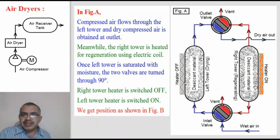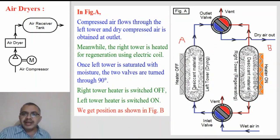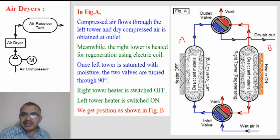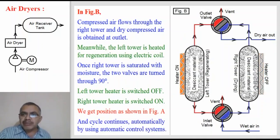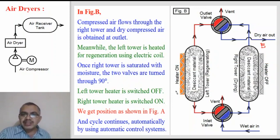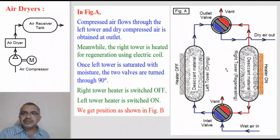When Tower A is drying compressed air by absorbing moisture, Tower B is being heated and regenerated. Once Tower A gets saturated with moisture, the two valves are turned through 90 degrees so that compressed air is diverted to Tower B. Then the heater of Tower A is switched on and the heater of Tower B is switched off. The moisture evaporated from Tower A is exhausted to atmosphere through a vent. This is how the two towers are operated alternately.